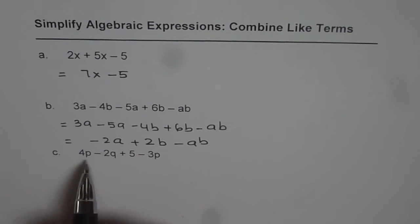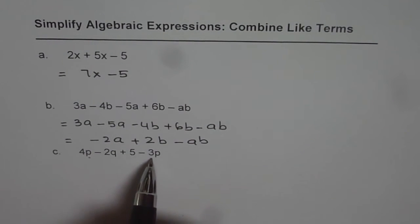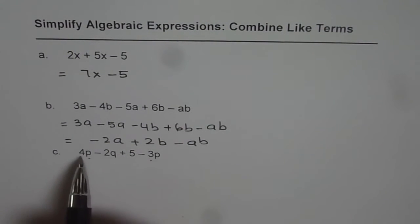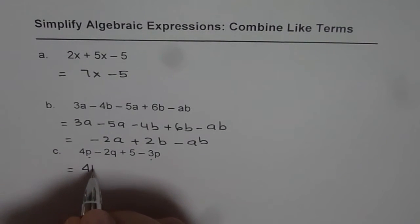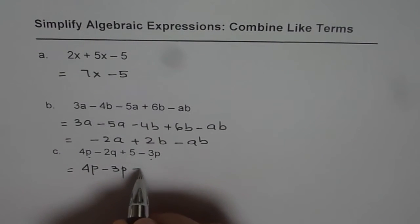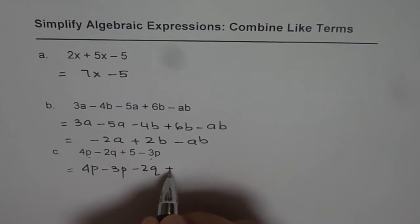Now, part C is 4p minus 2q plus 5 minus 3p. We have two terms which are like terms: 4p and 3p. We can write first as 4p minus 3p, then we have minus 2q plus 5.